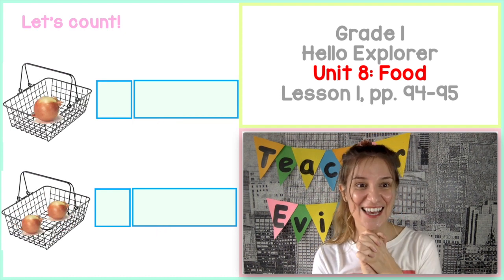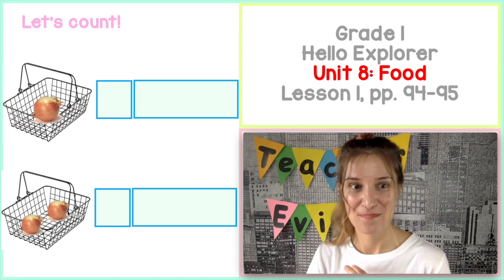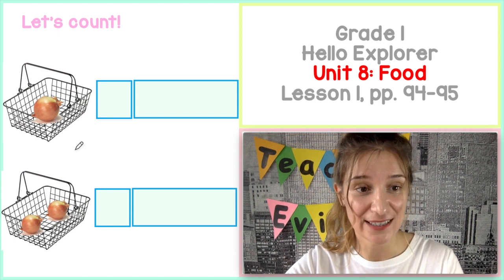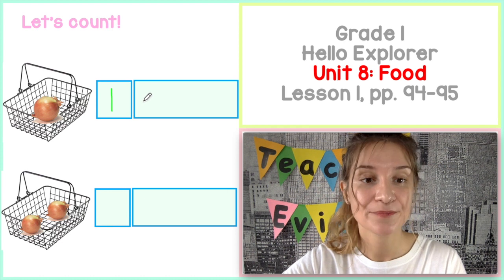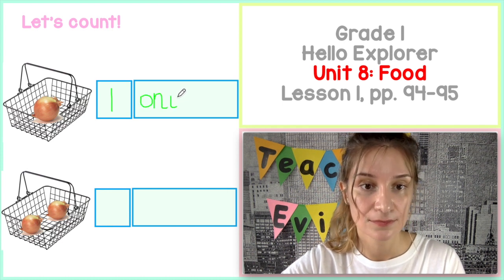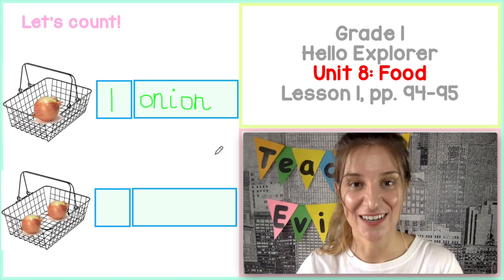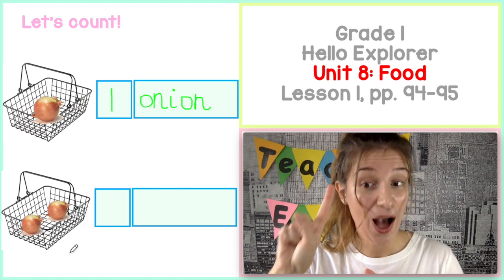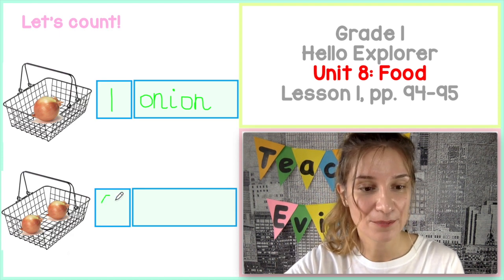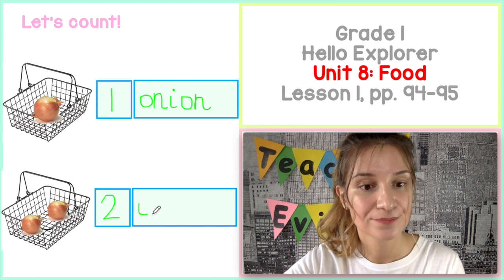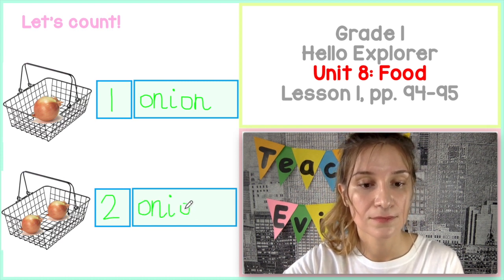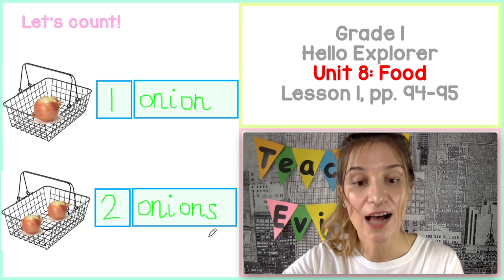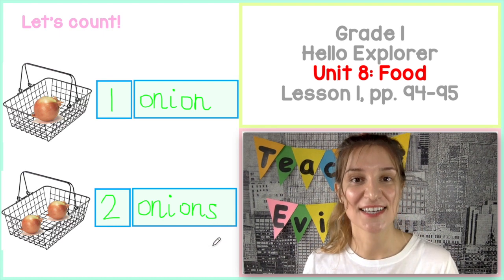What's that in the basket? Pamiętasz to słówko? Cebula. Onion. How many onions? Ile tych cebul tutaj jest? Jedna. One onion. And in the second picture — how many onions? Ile jest cebuli? Two onions. Onions — Teacher Evie już dopisała S, bo tutaj mamy więcej niż jedną. Onions. Now you say it — two onions.